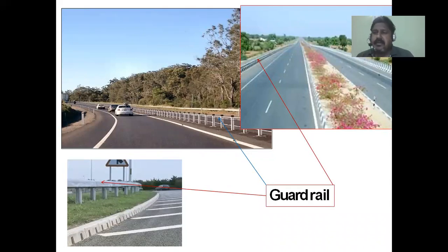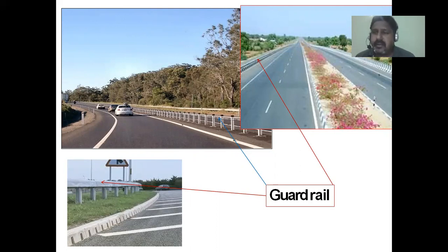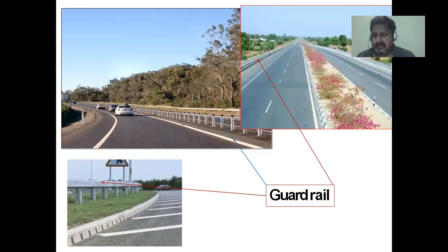So today we have talked about Highway Cross Section Elements Part 2, covering kerbs, road margins, shoulders, bus bays, service roads, cycle tracks, footpaths, and guard rails. That's all for today's lecture. Thank you, see you next time.